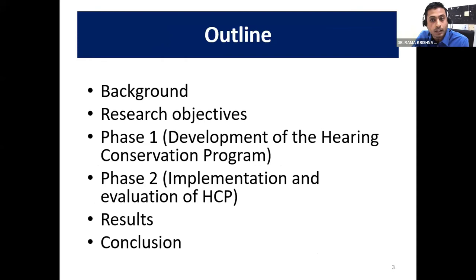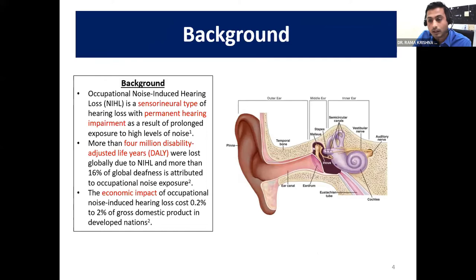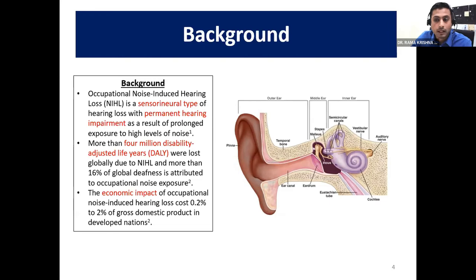Occupational Noise-Induced Hearing Loss is considered a sensory neural type of hearing loss which results in permanent hearing impairment as a result of prolonged exposure to excessive noise. The main problem is due to exposure to excessive noise at the workplace. Certain job categories involve workers being exposed to excessive noise at the workplace, and to understand occupational NIHL we have to understand the physiology of hearing first.